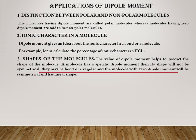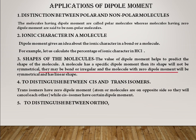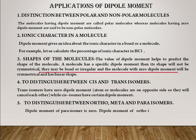Molecules with a non-zero dipole moment may be bent or irregular in shape, while a molecule with zero dipole moment will be symmetrical and has a linear shape. If there is a development of poles, the molecule becomes irregular. The fourth application is to distinguish between cis and trans isomers. Trans isomers have a zero dipole moment, while cis isomers have a certain dipole moment, allowing you to differentiate between them. The fifth application is to distinguish between ortho, meta, and para isomers. The dipole moment of the para isomer is zero, while the dipole moment of the ortho isomer is greater than that of the meta isomer.